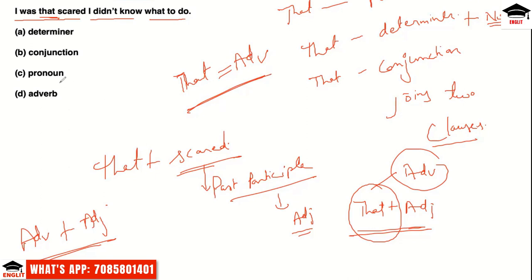The correct answer is D — 'that' as an adverb. It is not a pronoun since it is not the subject of the sentence. It is not a conjunction since it is not joining two clauses. Whenever 'that' modifies a past participle or adjective to heighten intensity, its function is that of an adverb.